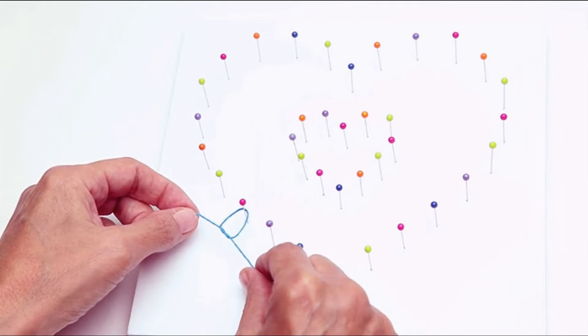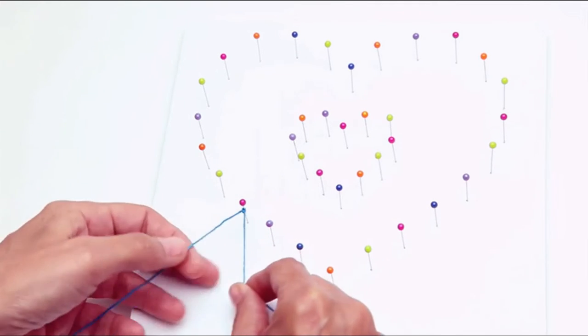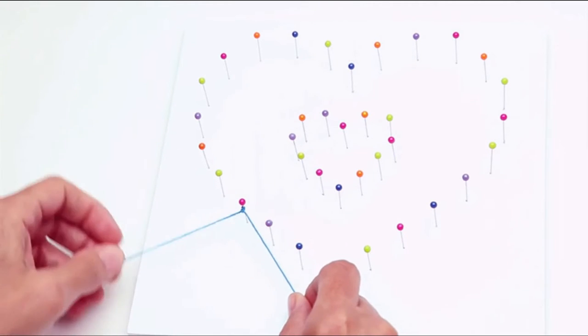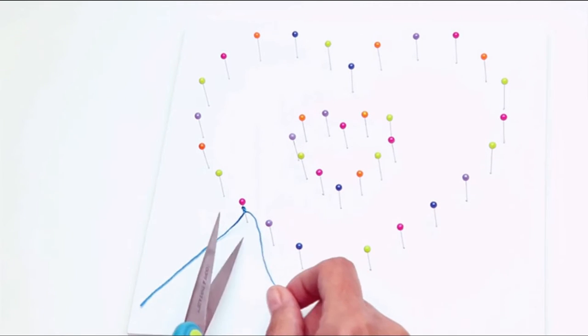Select the thread you want to start with and double knot it onto a pin. Trim the excess with scissors.